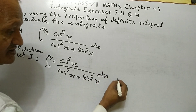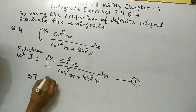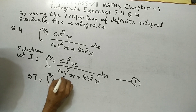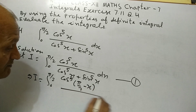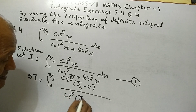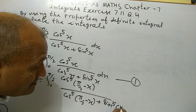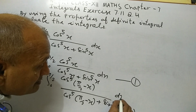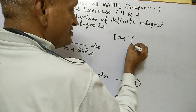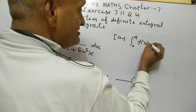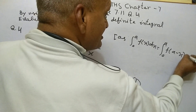Equation 1 implies I equal integral from 0 to π/2 of cos⁵(π/2 minus x) upon (cos⁵(π/2 minus x) plus sin⁵(π/2 minus x)) dx. This uses the property: integral from 0 to a of f(x) dx equals integral from 0 to a of f(a minus x) dx.